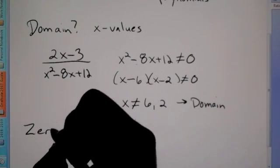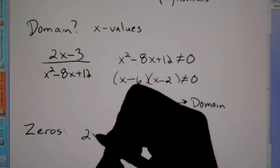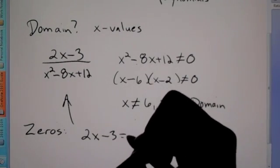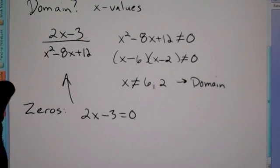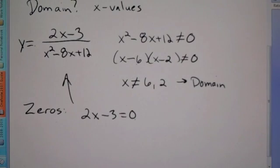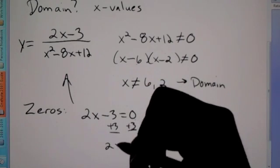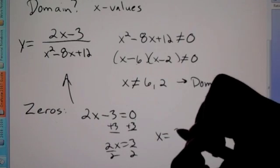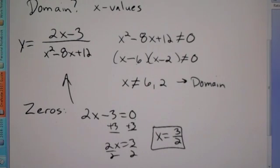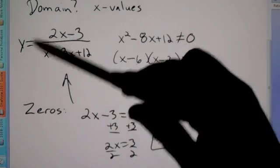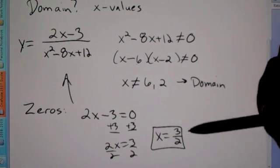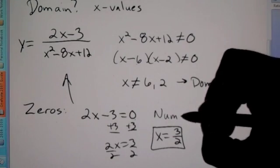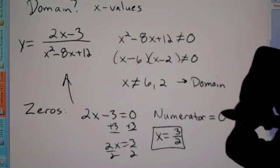Next, we'll be asked for zeros. Using the same problem, to find zeros you set your numerator equal to 0. This tells you what value of x makes the whole expression equal to 0 — making your y value equal to 0. So set 2x - 3 = 0, add 3, giving 2x = 3, divide by 2, so x = 3/2. That's your zero — the only number you can plug in to make the whole expression equal to 0, since a numerator of 0 sets the whole problem equal to 0.